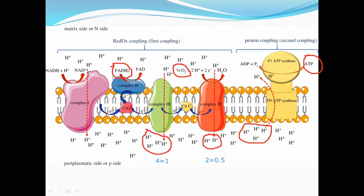So FADH2 gives 1 plus 0.5, which is 1.5 ATP. FADH2 gives 1.5 ATP formation because FADH2 electrons pass through complex 3 and complex 4 only — 4 protons from complex 3 and 2 protons from complex 4. So 1 plus 0.5 equals 1.5 ATP production for FADH2.